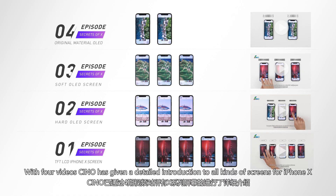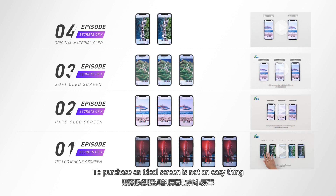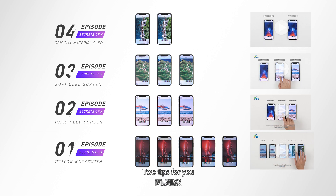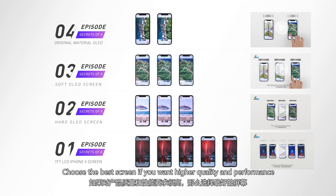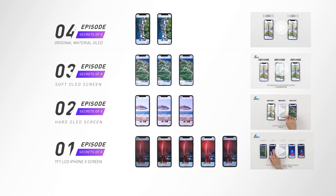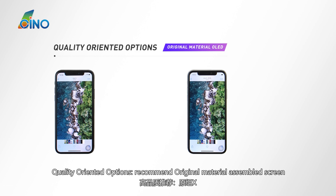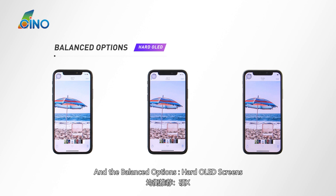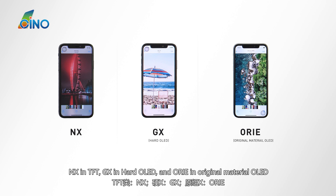With four videos, we have given a detailed introduction to all kinds of screens for the iPhone X. To purchase an ideal screen is not an easy thing — here are two tips. Choose the best-price option if you only want standard quality and performance; choose the best screen if you want higher quality and performance. The best-price option: choose TFT screens. Quality-oriented option: recommend original material assembled screen. Balanced option: hard OLED screens. Specific recommendations: NX for TFT, GX for hard OLED, and ORIE for original material OLED.